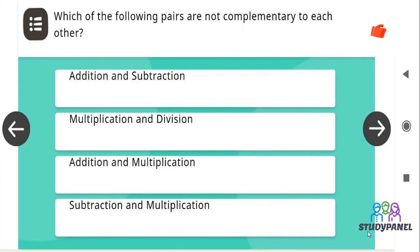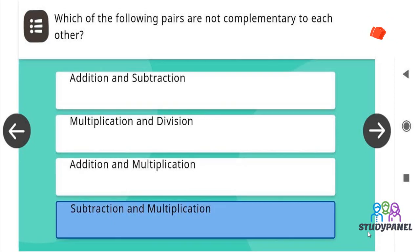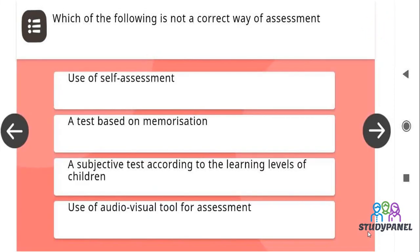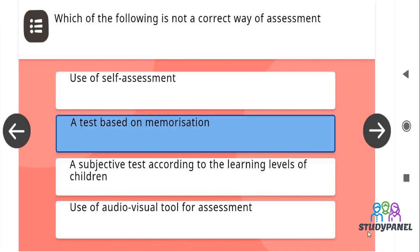Which of the following pages are not complementary to each other? The correct answer is subtraction and multiplication. Which of the following is not a correct way of assessment? The correct answer is a test based on memorization.